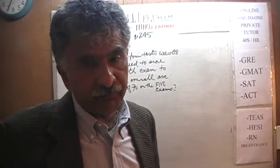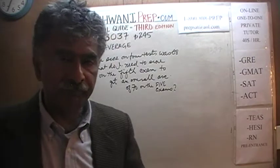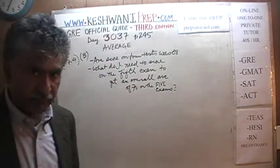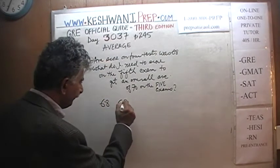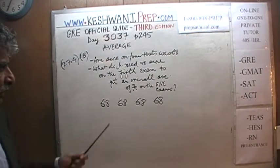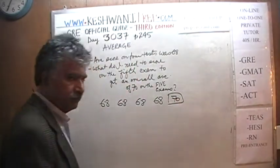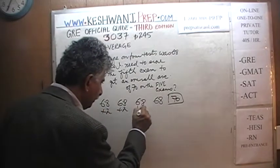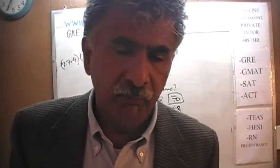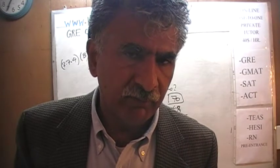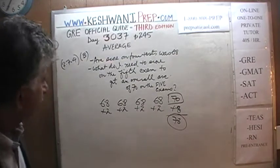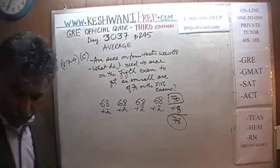The simplest, quickest, most economical way: since my average on the four exams is 68, pretend that I scored exactly 68 on all four of them. I want an overall average of 70, so I need to make up two points for each of the four exams — that is eight points total. I need to score 78 on the fifth exam. Those extra eight points will spread across the four prior exams, giving each two extra points.